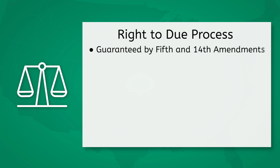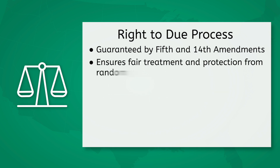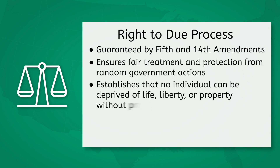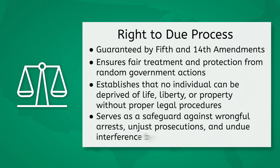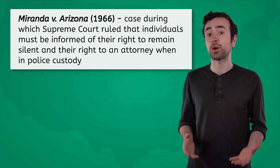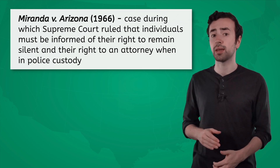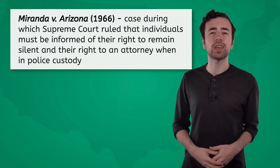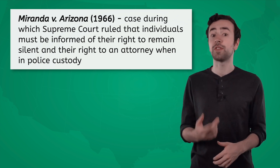The Fifth and Fourteenth Amendments guarantee the right to due process, ensuring fair treatment and protection from random government actions. This right establishes the principle that no individual can be deprived of life, liberty, or property without proper legal procedures. It serves as a safeguard against wrongful arrests, unjust prosecutions, and undue interference by the government. For example, in the Supreme Court case of Miranda v. Arizona in 1966, the court held that individuals must be informed of their right to remain silent and their right to an attorney when in police custody. This decision established the famous Miranda rights, ensuring that individuals are aware of their rights and are afforded the opportunity to defend themselves during criminal proceedings. These are only a small handful of the many rights U.S. citizens are entitled to, and as time passes, there may even be more.